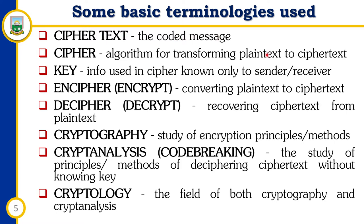So ciphertext is the coded message itself. The plaintext is the whole readable statement, but the moment we apply a cipher to the plaintext we get a ciphertext. The cipher itself is the algorithm being used to transform the plaintext to the ciphertext. There are lots of algorithms available and we will talk about them as we move along.